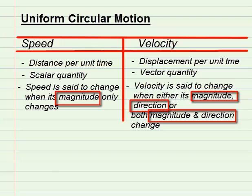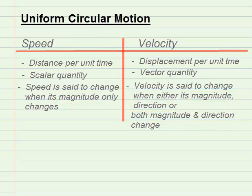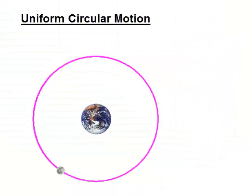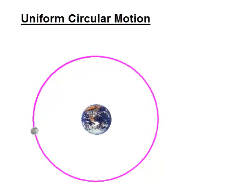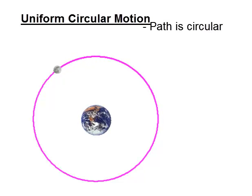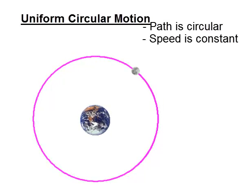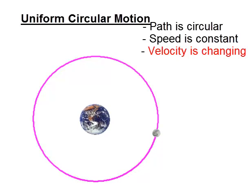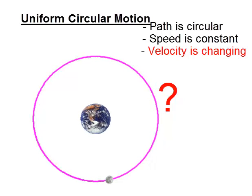Remember this distinction as we go through this lesson. Now let us study an object moving in a circular path with constant speed. Such an object is the moon orbiting the earth. The simulation shows the moon orbiting the earth. Its path around the earth is circular and it has a constant speed. Its velocity, however, is changing. How is it possible that its speed is constant and yet its velocity is changing?